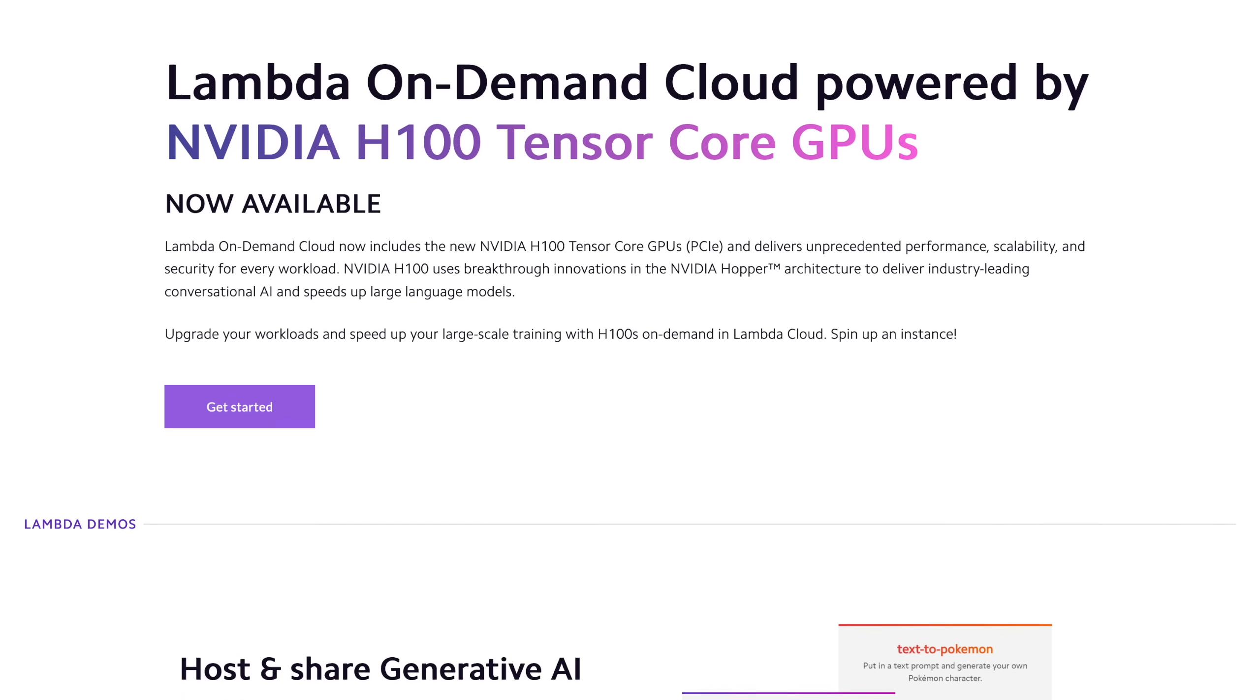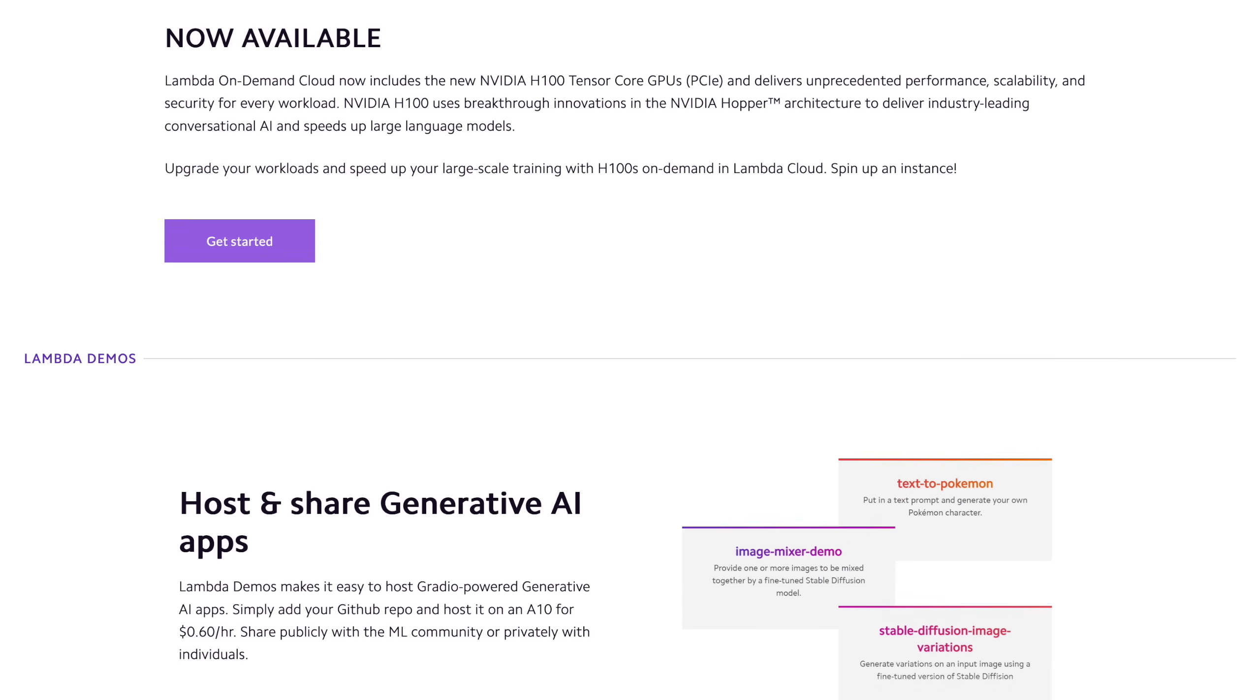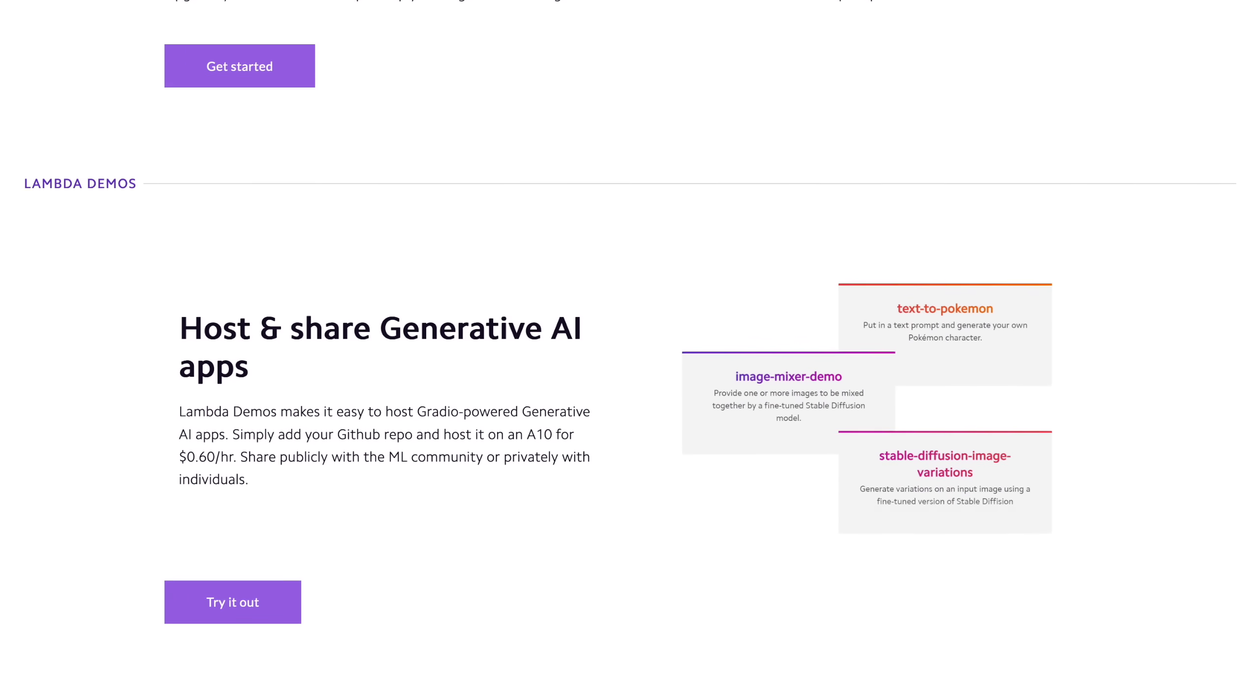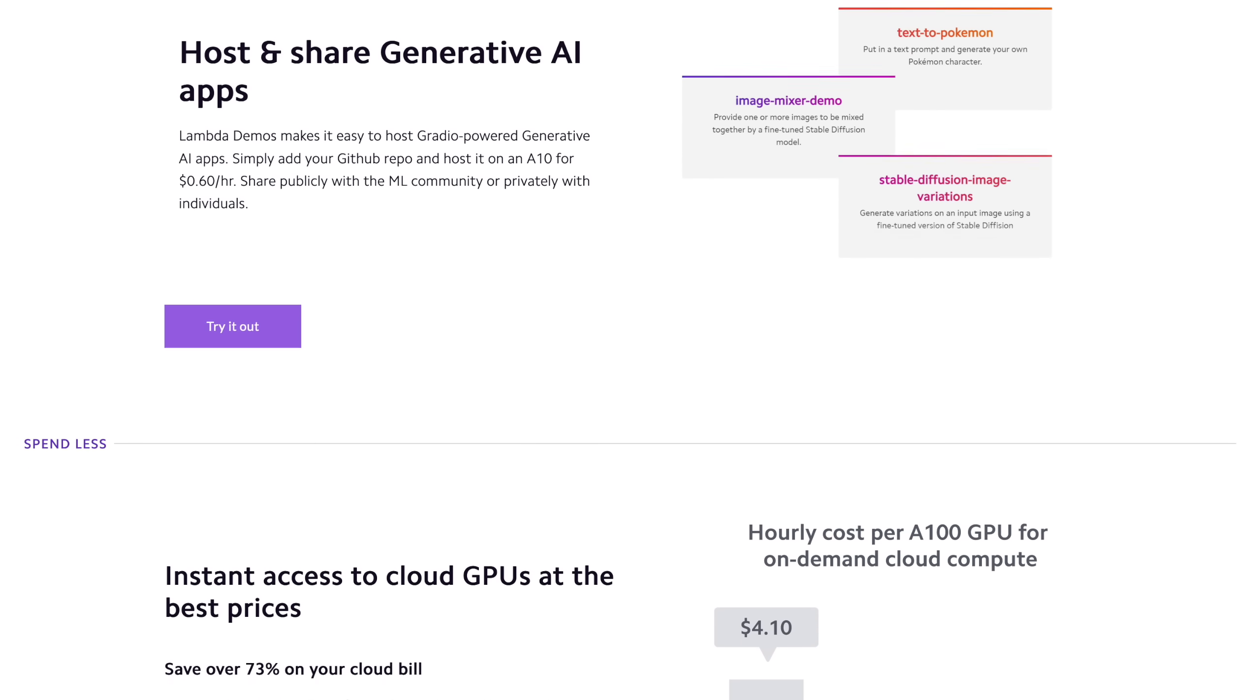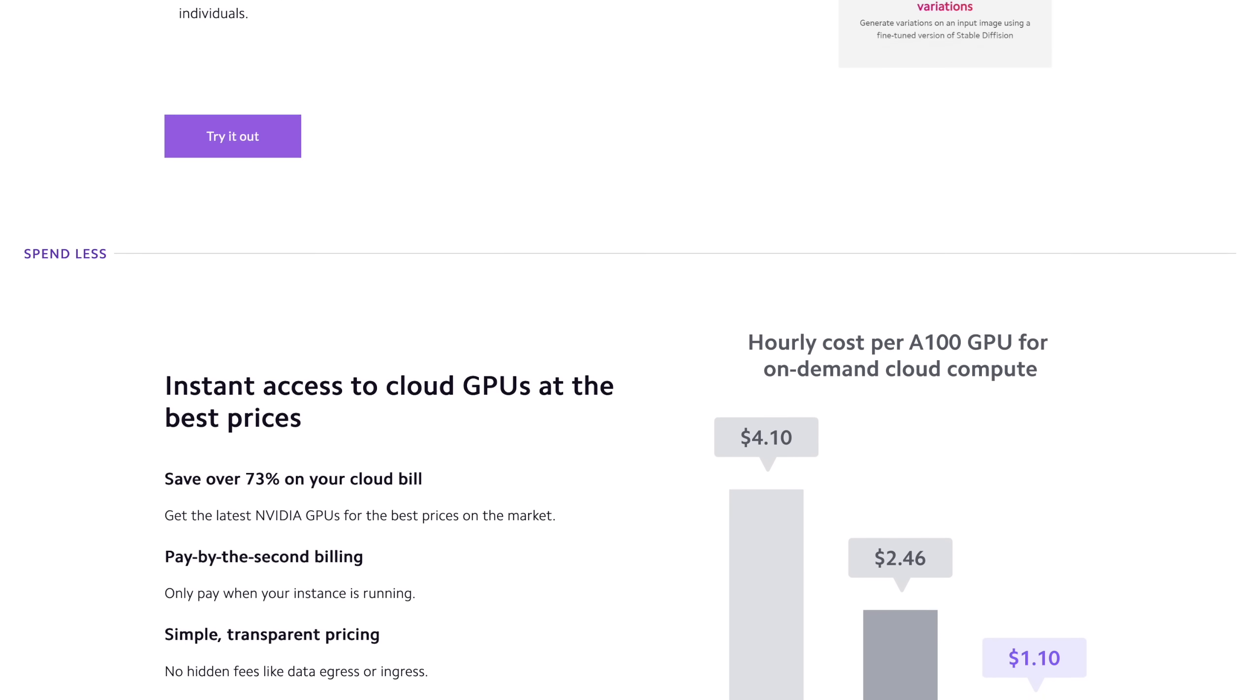Just sign up and launch an instance, and hold on to your papers, because with the Lambda GPU cloud, you can now get on-demand H100 instances for just $199 per hour.